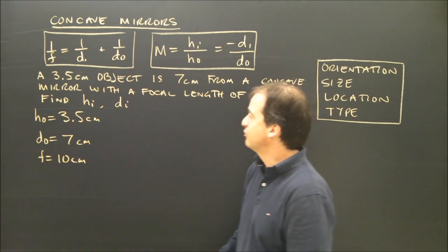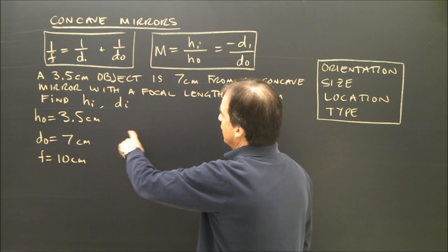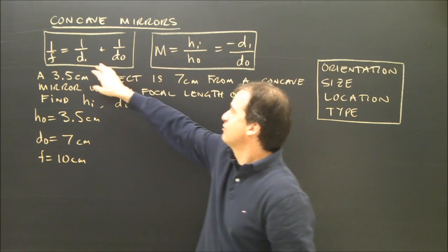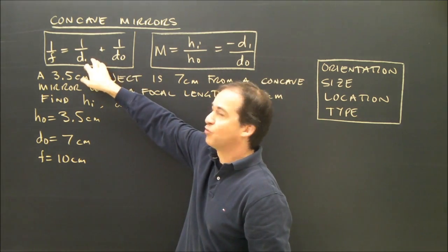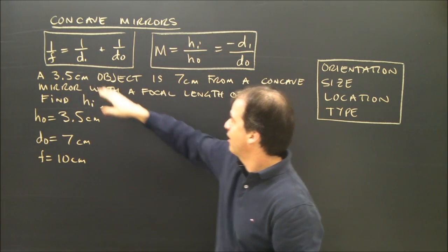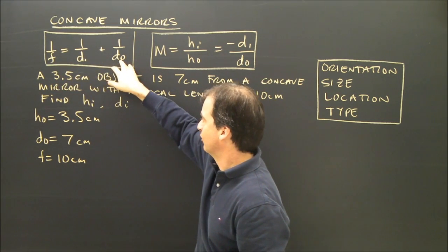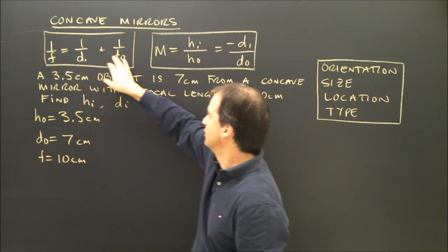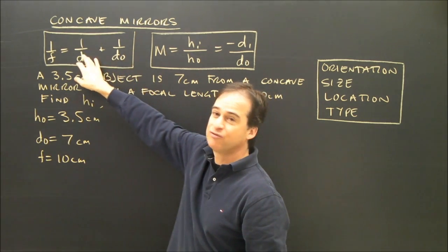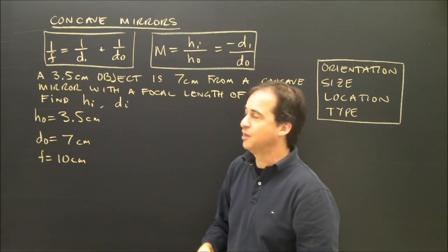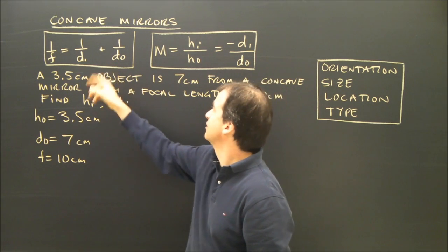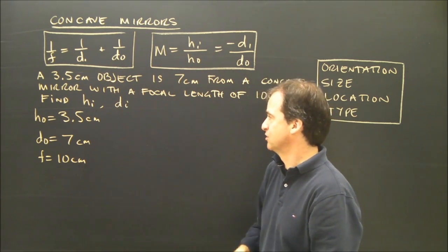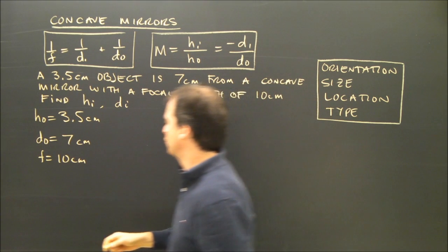I want to find the height of the image and the distance to the image. Looking at my variables, I've noticed that the mirror equation is better suited here because I have three unknowns and I know two of them — the focal length and the distance to the object. So I'm going to find the distance to the image first, because I'll need it to use the magnification formula.